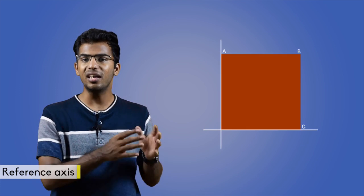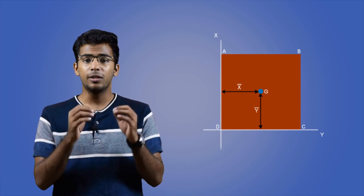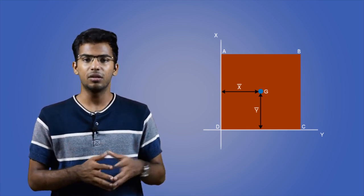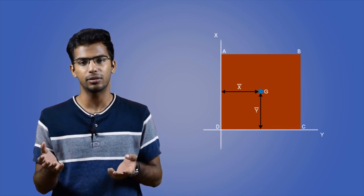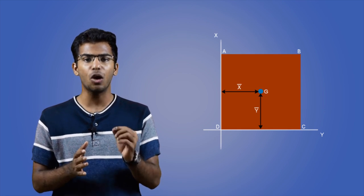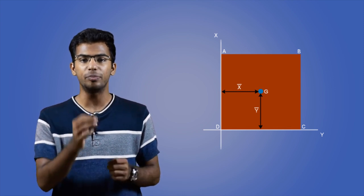Before we get to the derivation of centroid of a few simple shapes, we'll go through some of the basic terminologies. We need to be aware of different types of axis while solving the problems on centroid. The first one is the reference axis. These are the axis with respect to which the centroids are calculated. The plane figures will be under these axis. They're called as x-axis and y-axis.